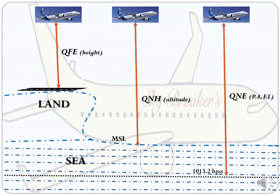Here you can see a more understandable diagram. When you set your altimeter to QFE, the reference is taken from Above Ground Level, and your altimeter will show height. When you set your altimeter to QNH, the reference is taken from Mean Sea Level, and the altimeter will show altitude. When you set your altimeter to QNE — 1013.25 hectopascal, International Standard Atmosphere — you will get flight level or pressure altitude.